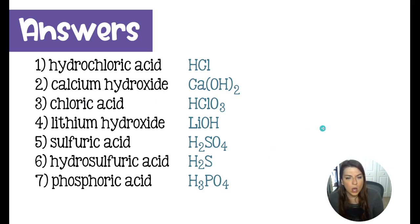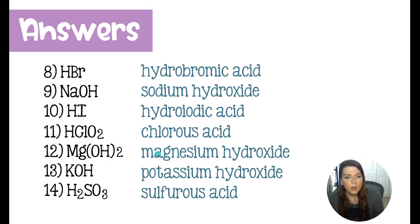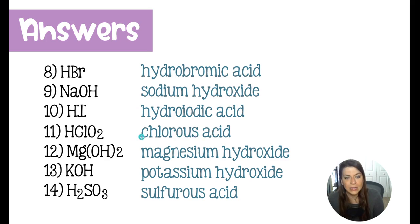Moving on, HClO2 is chlorous acid. So that tells us that we are working with an '-ite' poly. Lacking the 'hydro' tells you that it has to come from a poly — so that would be hydrogen bonded to chlorite.